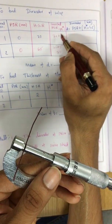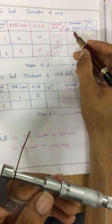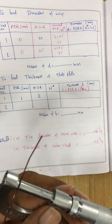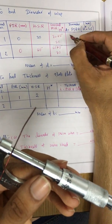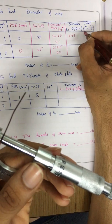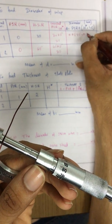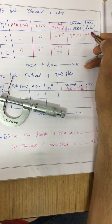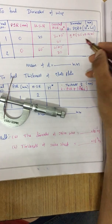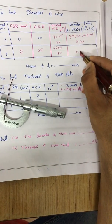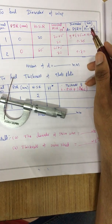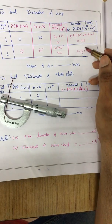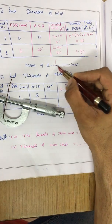For the second trial the corrected HSR is 70 + 5 = 75. Using the formula: total reading = PSR + corrected HSR × least count = 0 + 75 × 0.01mm = 0.75mm. The first trial gives 0 + 70 × 0.01 = 0.70mm. To find the mean diameter, add these two values and divide by two. The result is in millimeters.